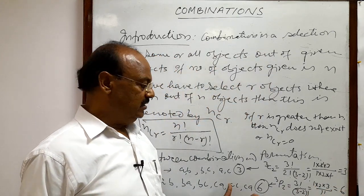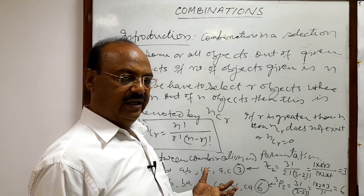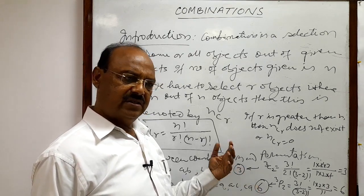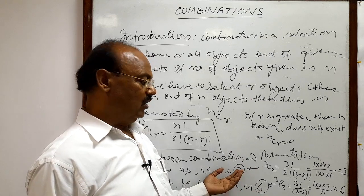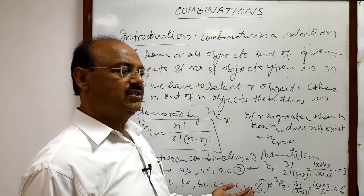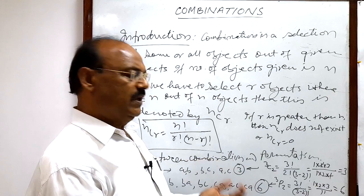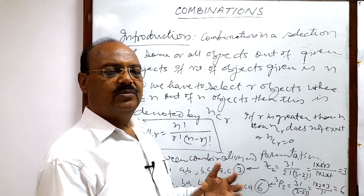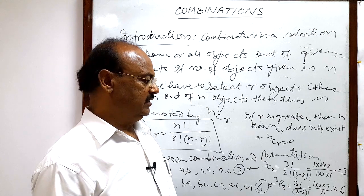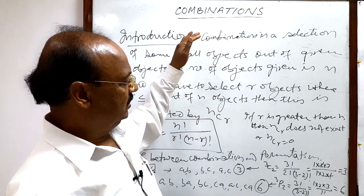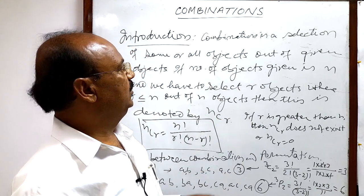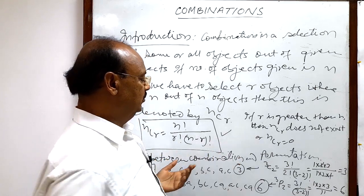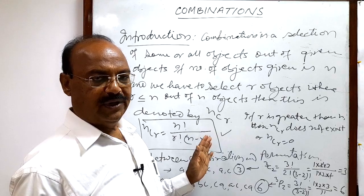It is very clear that the number of permutations is always more than the number of combinations, because in permutations order or arrangement is considered, whereas combination is simply the selection of objects. I hope the introduction of combinations is clear, and we must remember this formula for solving problems of combinations.